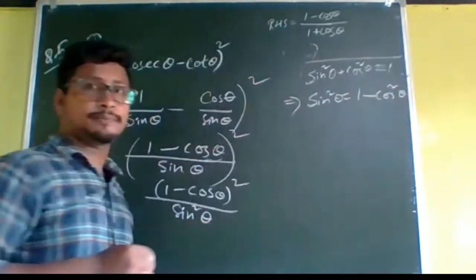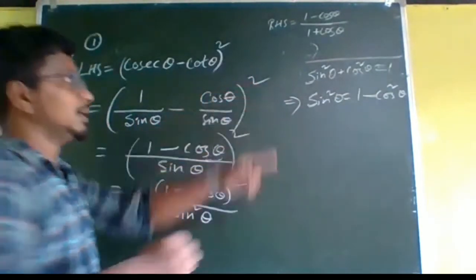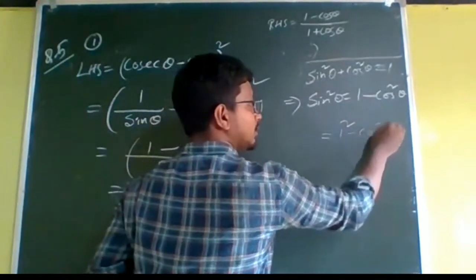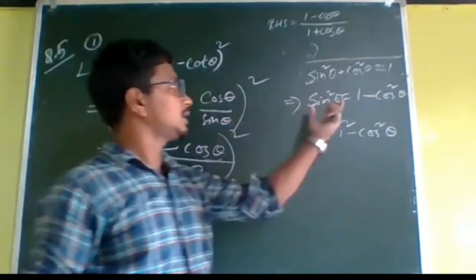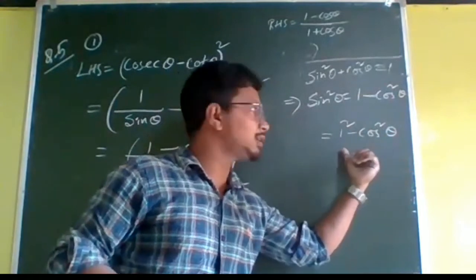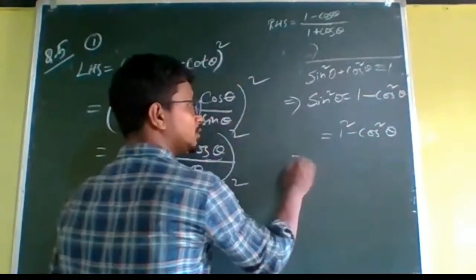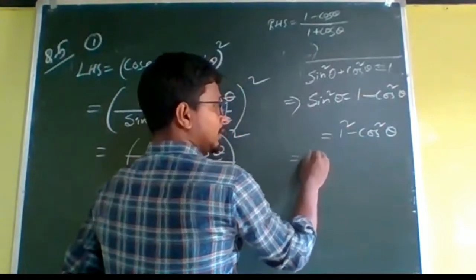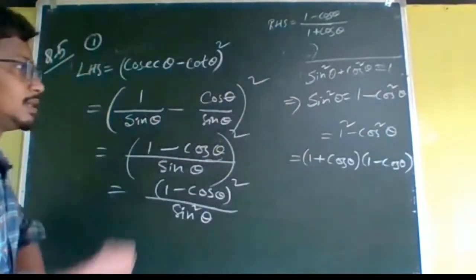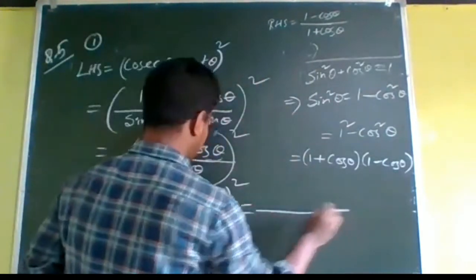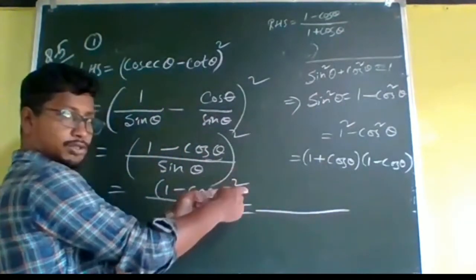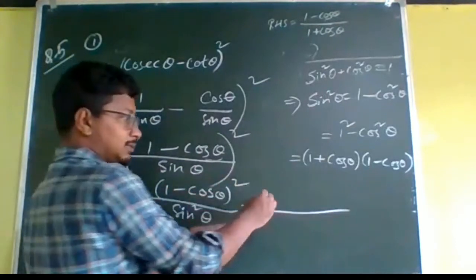So sin²θ = 1 - cos²θ. Now 1 can be written as 1² and we have 1² - cos²θ, which is like the identity a² - b². And a² - b² = (a + b)(a - b). So sin²θ = (1 + cosθ)(1 - cosθ). Now the numerator is (1 - cosθ)², which means (1 - cosθ) multiplied 2 times.